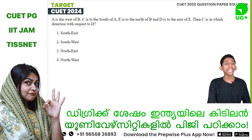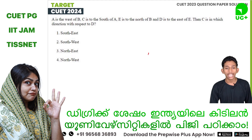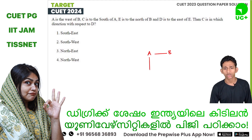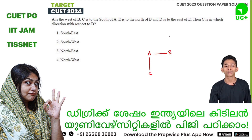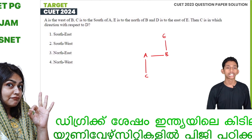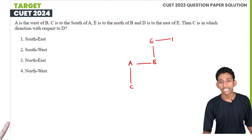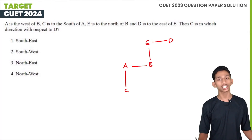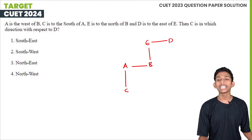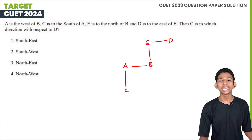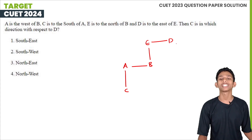Next question. A is west of B. B is west of C. C is south of A. E is north of B. D is east of E. The question asks: C is in which direction with respect to D? D is north of C, so C is south-west of D.